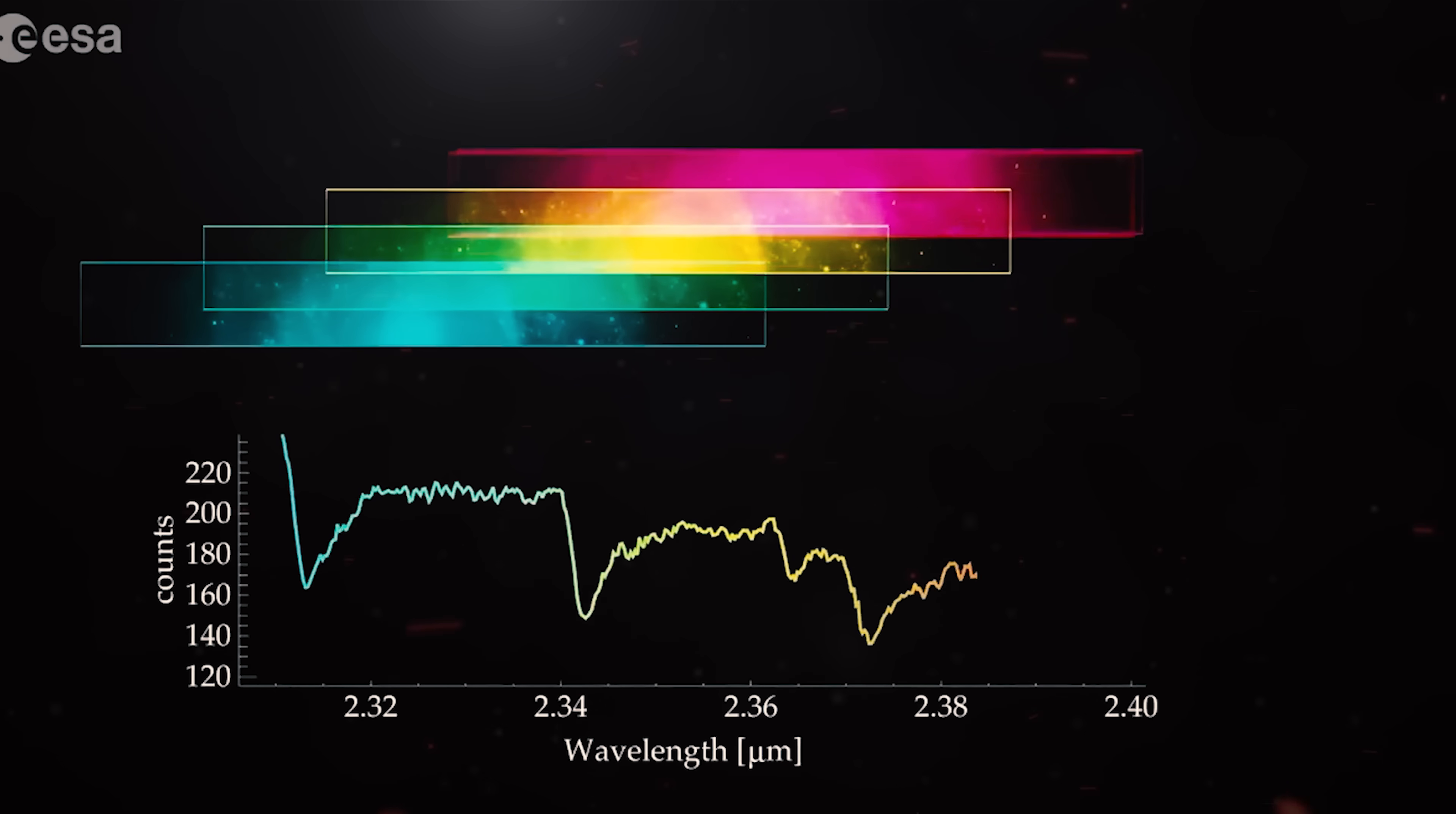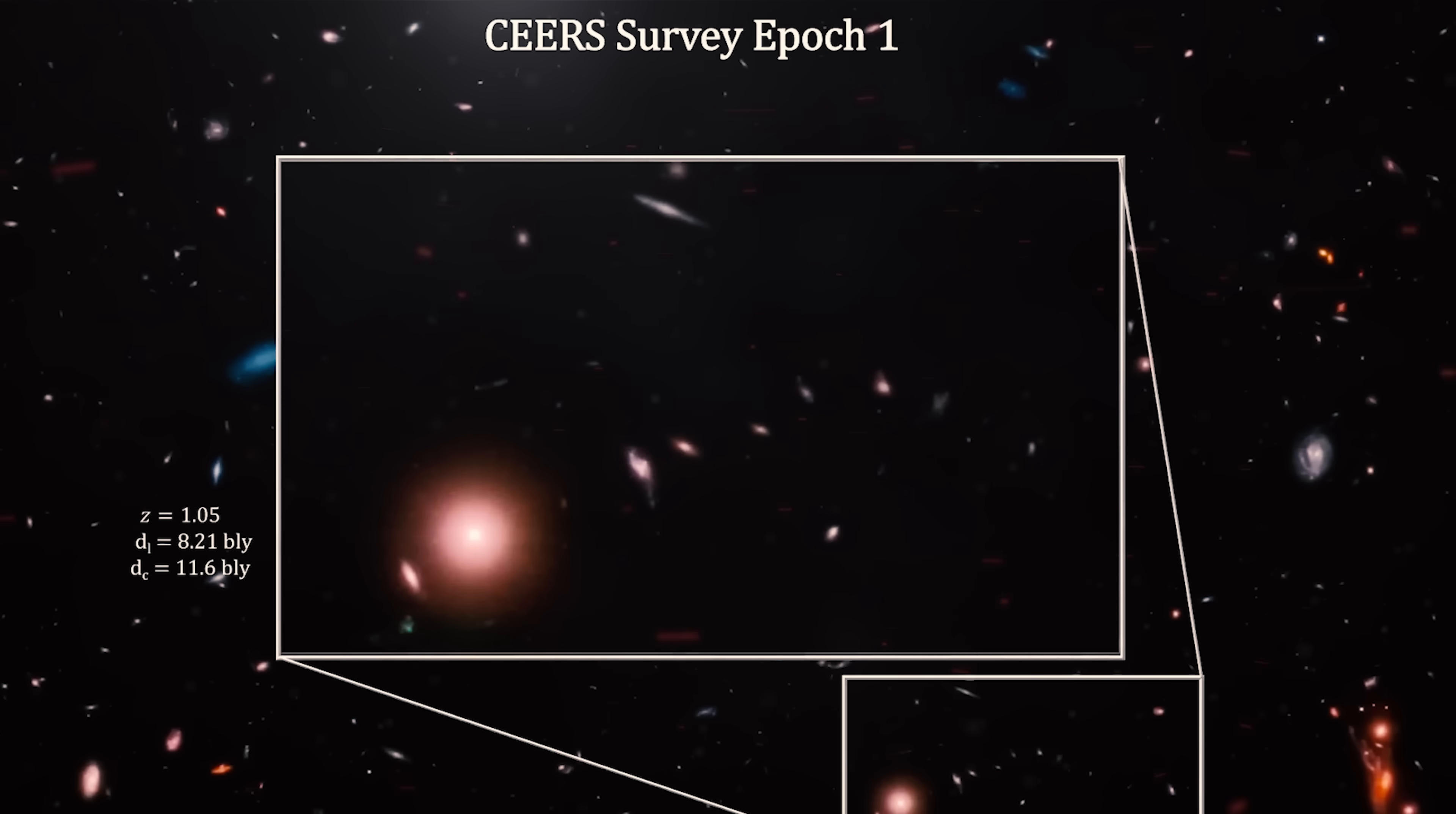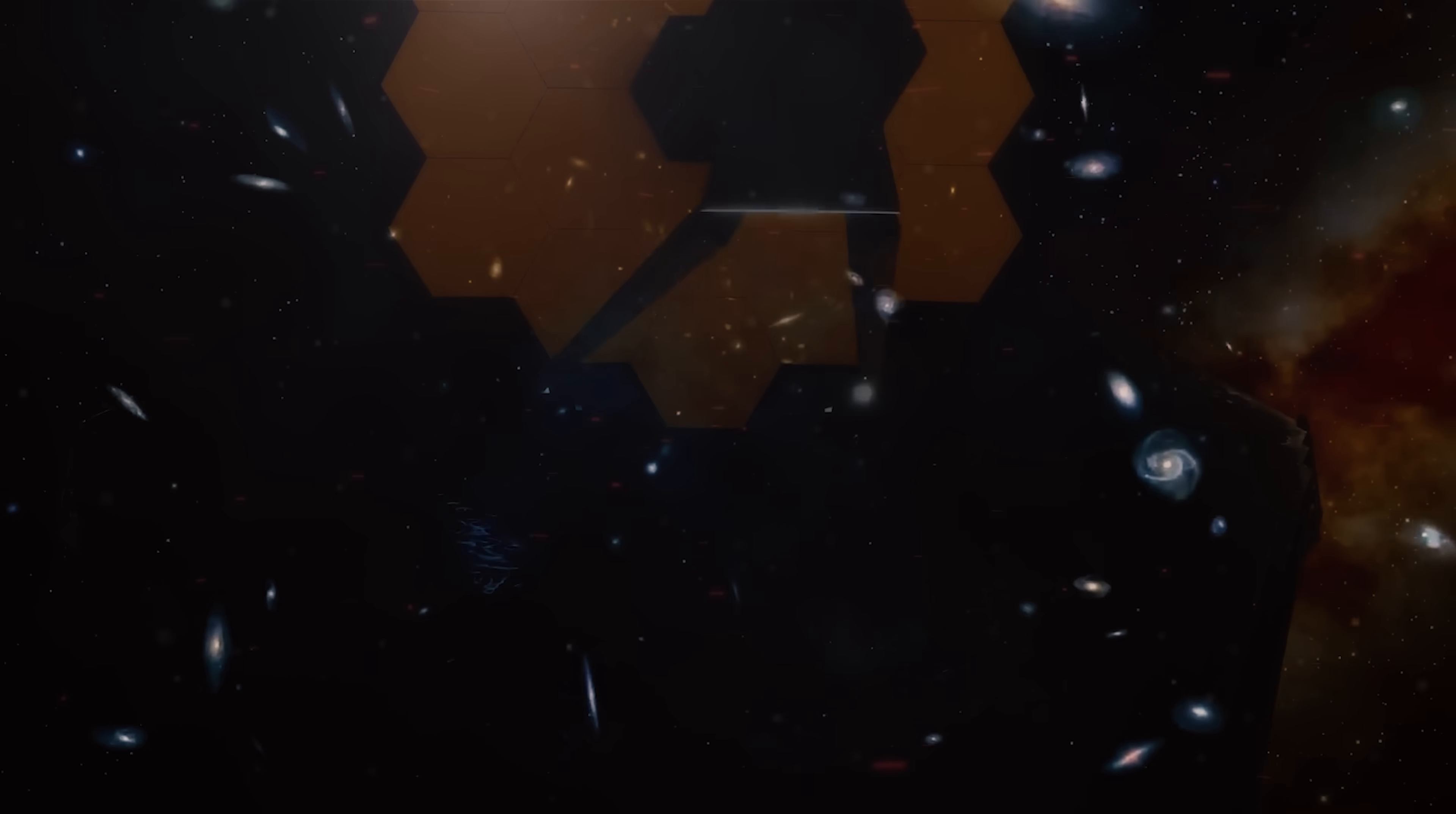They found that four out of the six galaxies do indeed have extreme redshifts. They came to this conclusion because the spectra from these galaxies lacked the telltale signature of heavy elements like carbon, meaning Webb is seeing them as they were when the universe was just 300 to 500 million years old.